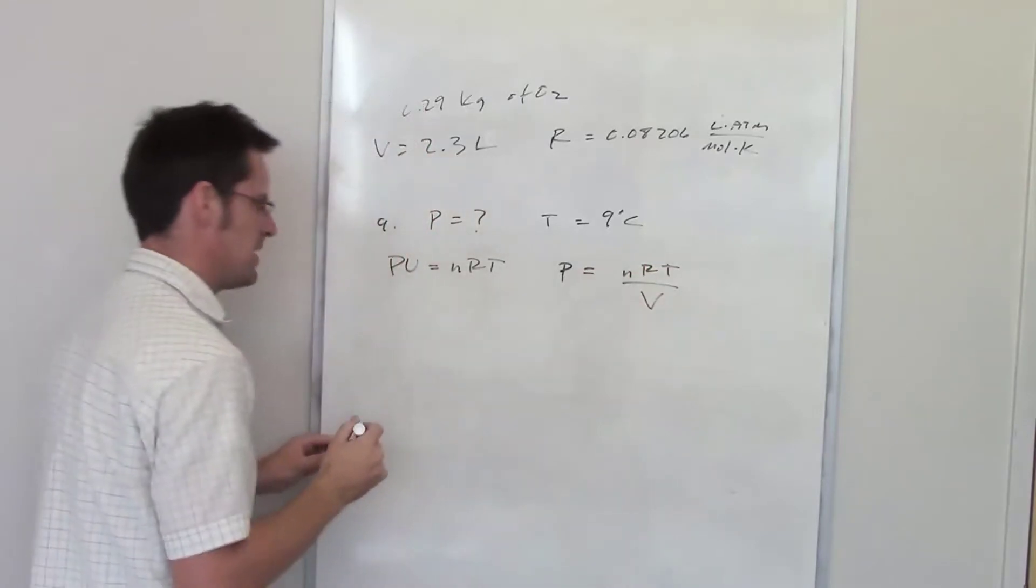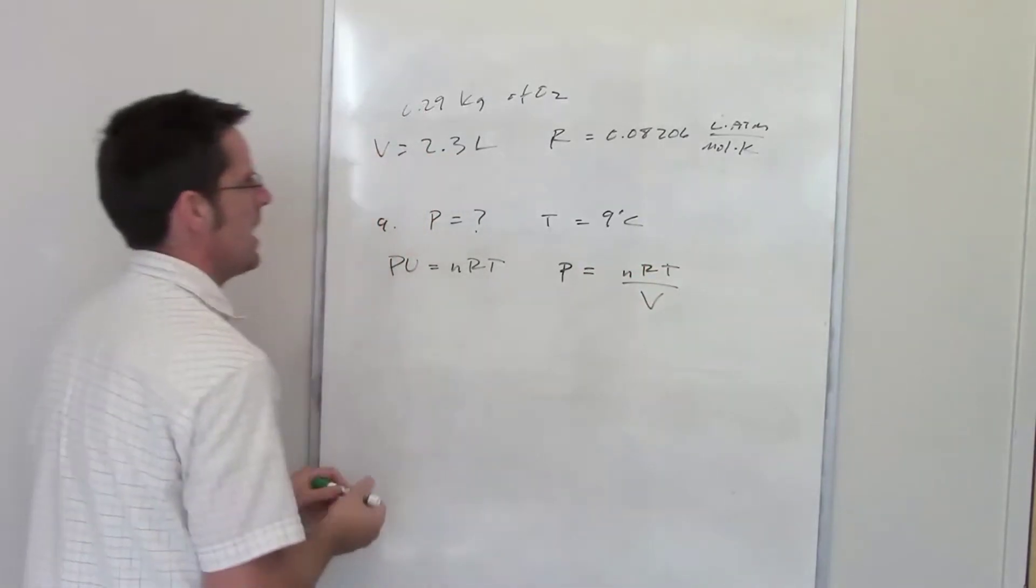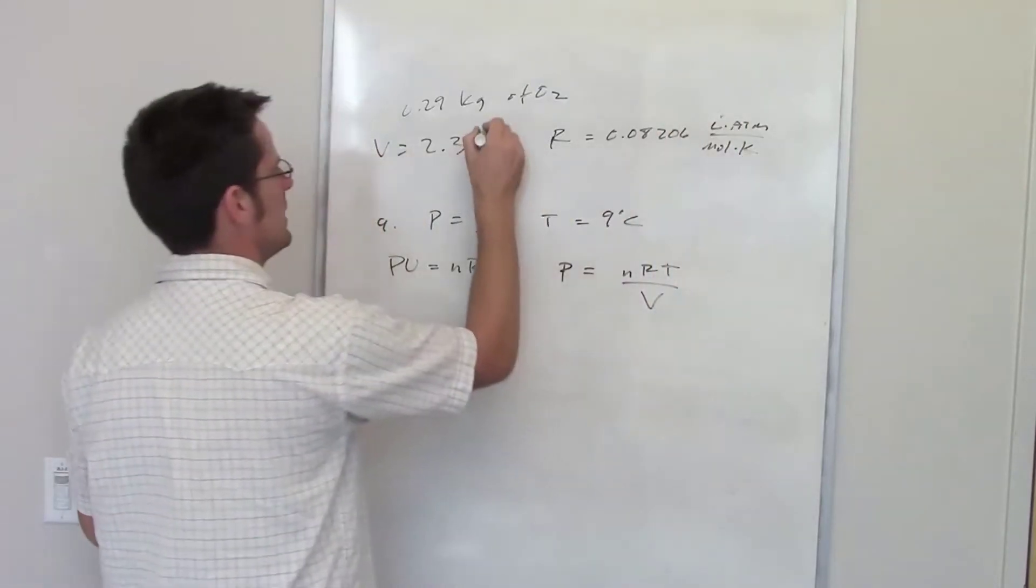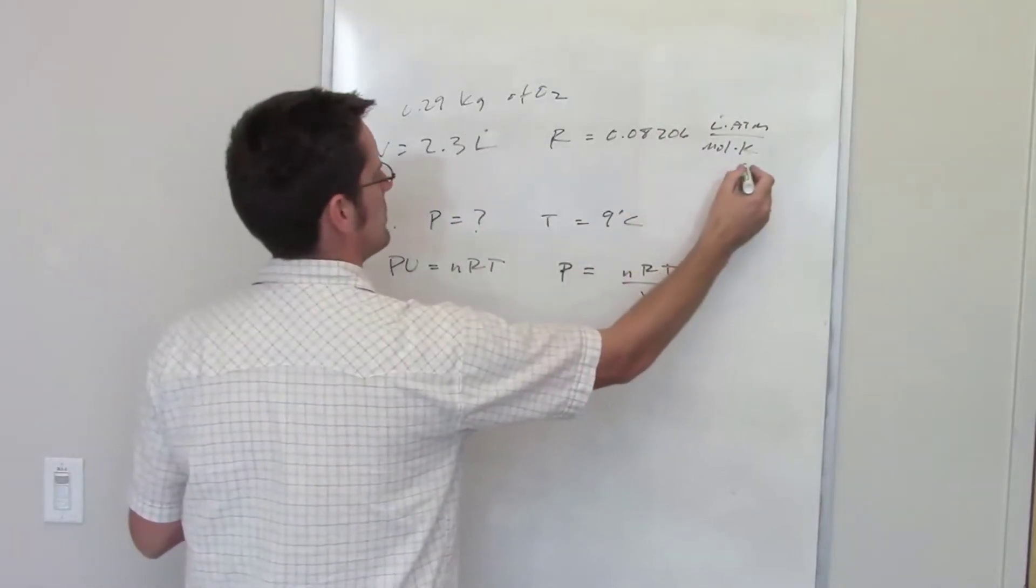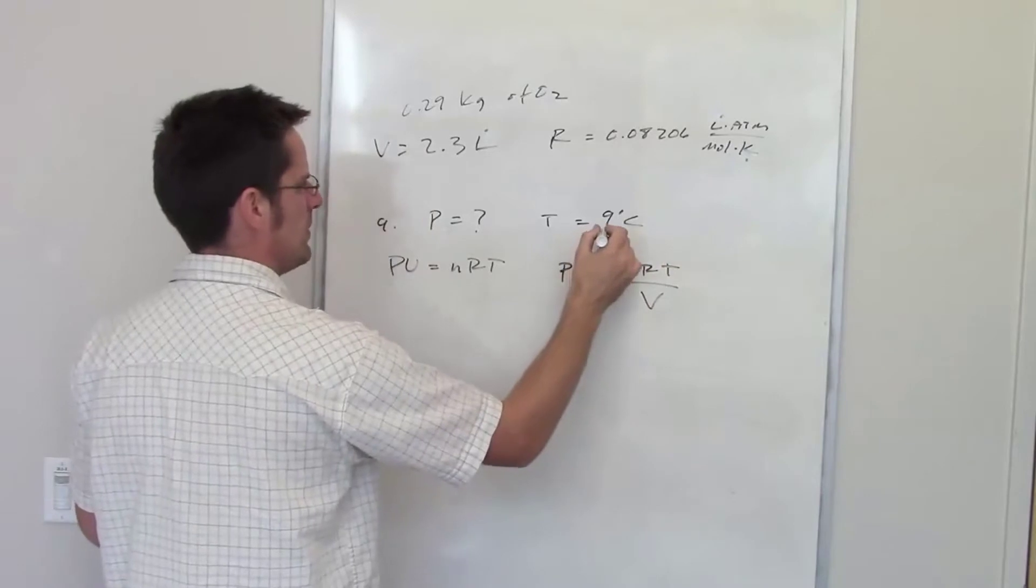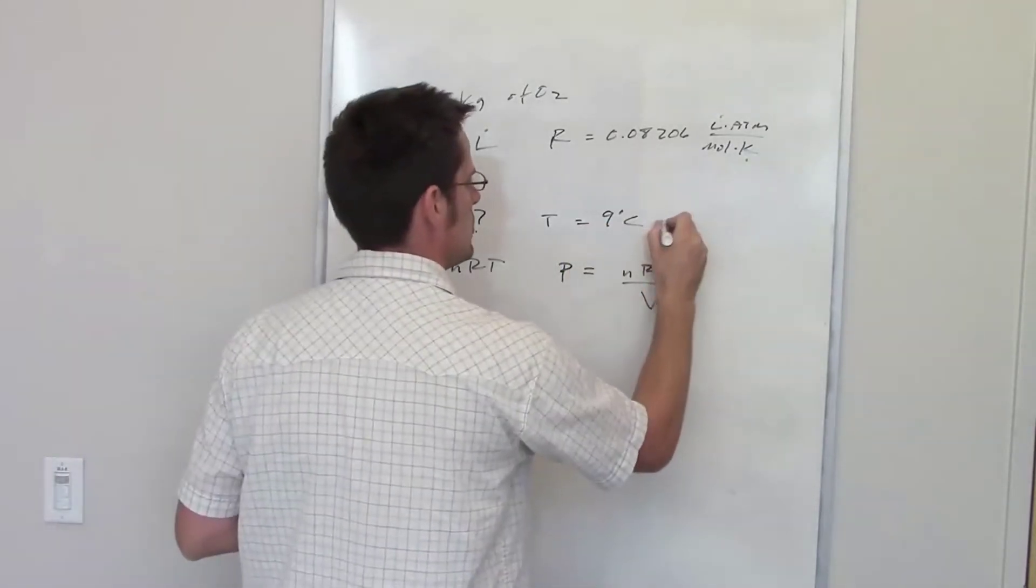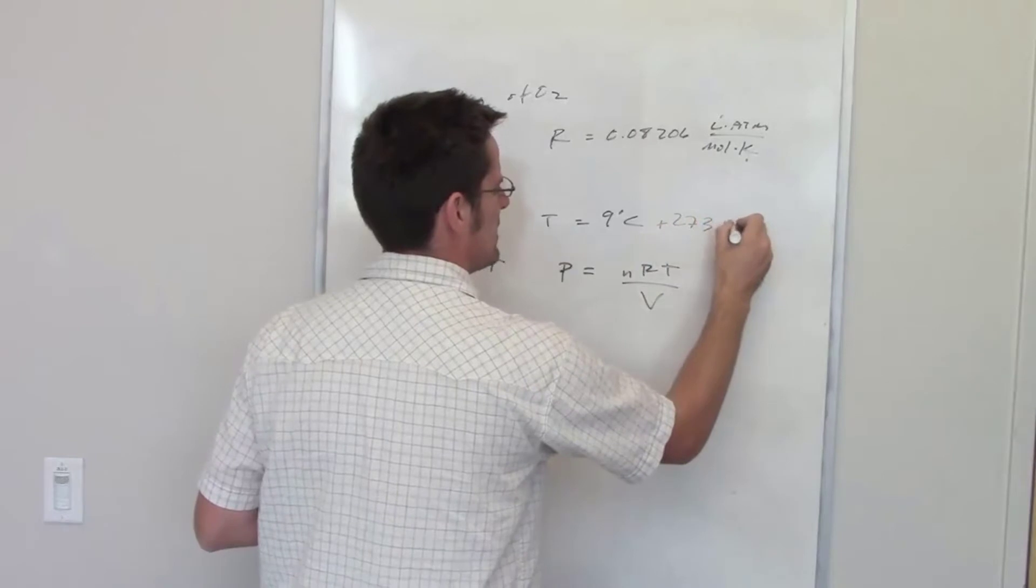Let's make sure that everything matches unit-wise. I have liters here and liters there. I've got kelvins here, but I don't have kelvins there - I've got degrees Celsius. So I'm going to have to add 273.15 to convert that into kelvins.